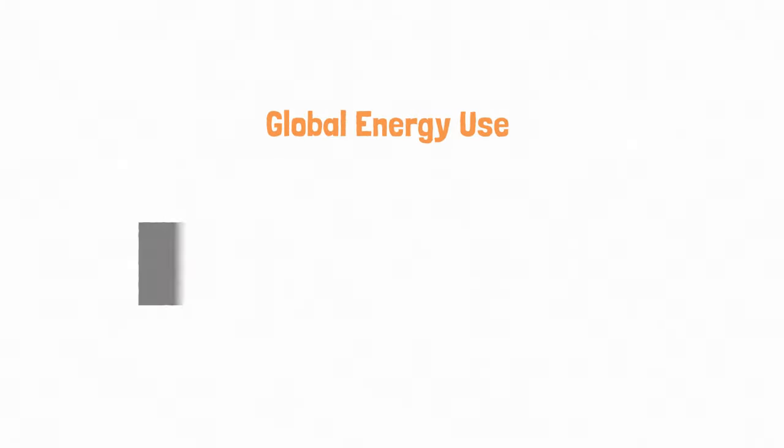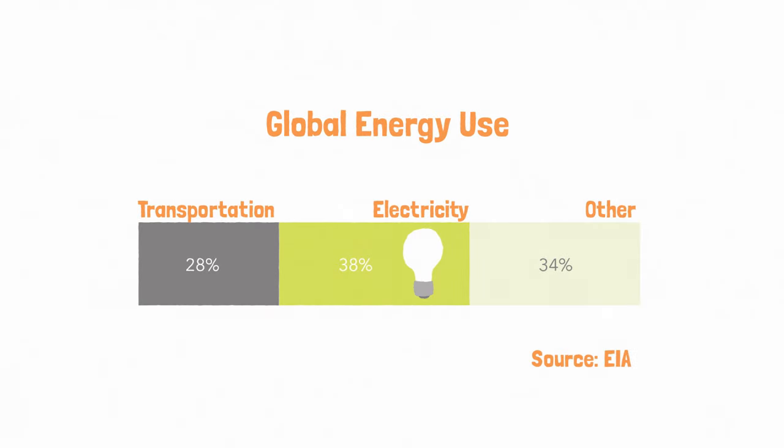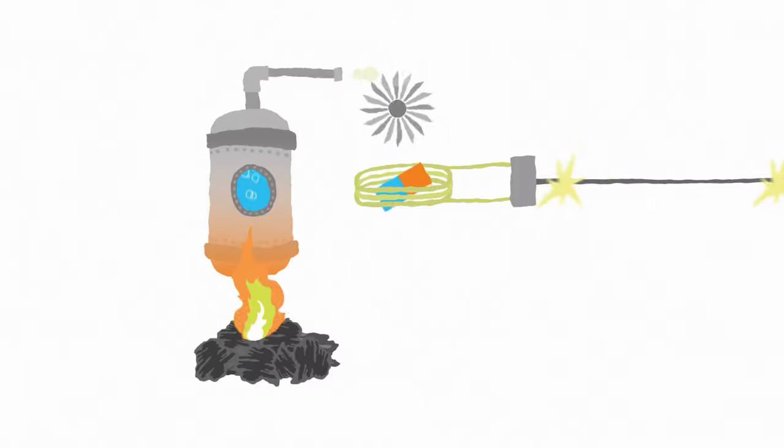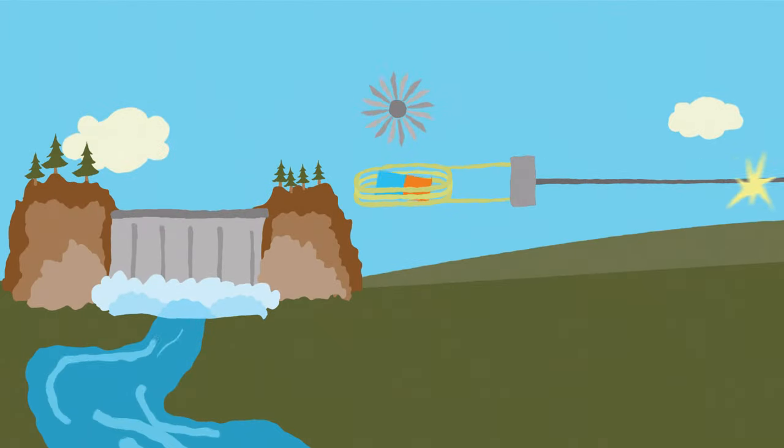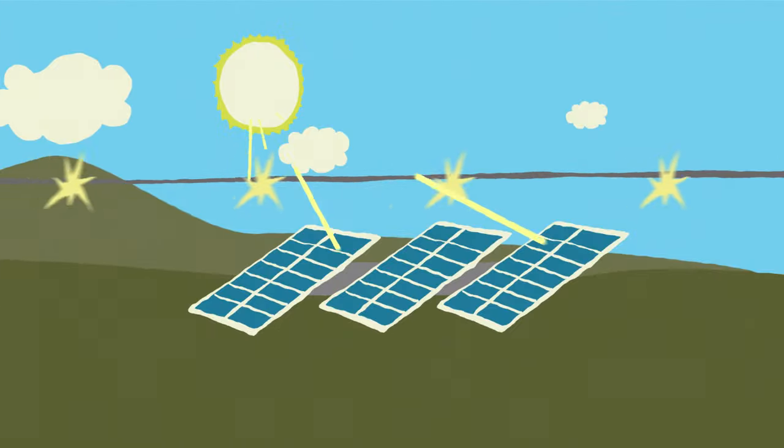But the vast majority of the energy we use today goes to generating electricity, which we do in all kinds of ways. We burn coal and natural gas, split atoms, dam rivers, harness wind, even turn sunlight directly into electricity.